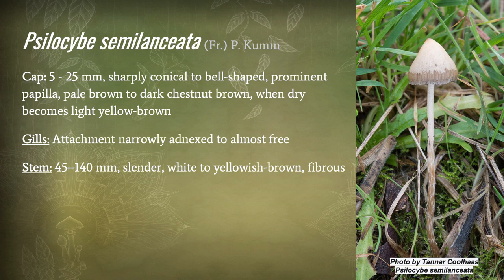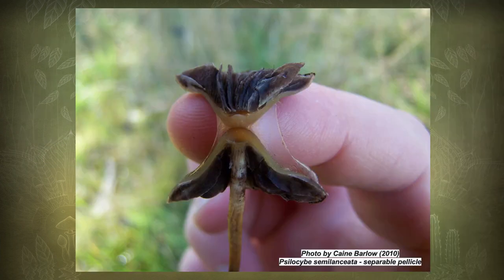A really good way to tell if they are Psilocybe semilanceata is to wrap the stem around your little finger. If the stem snaps, the chances are it's not semilanceata. But if they stay firm and together, then there's a good chance it is. As you open it, you should be able to see the separable pellicle — this is a common feature with many Psilocybe, including Psilocybe cyanescens and other species.